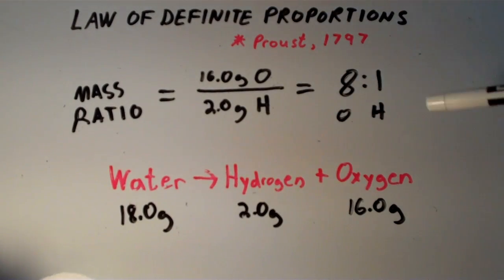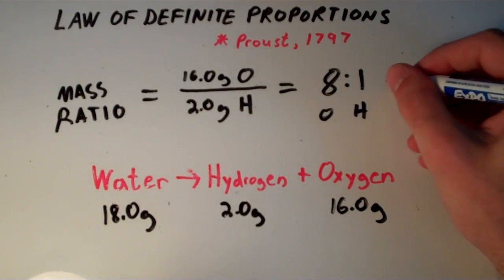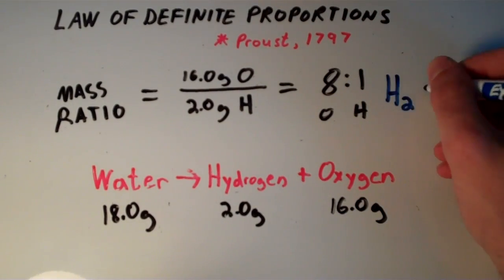Why does it always have this same proportion of its constituent elements? Well, think about it. Think about the formula for water. By now you probably know that the formula for water is H2O.